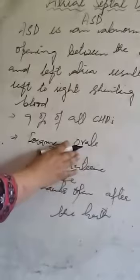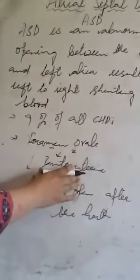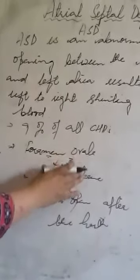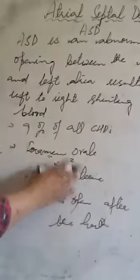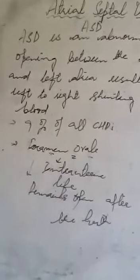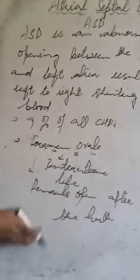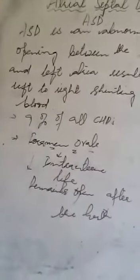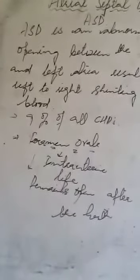During intrauterine life, the foramen ovale is a temporary opening. After the birth of the baby it closes, but in some cases the foramen ovale remains open after birth, resulting in atrial septal defect. This is the definition of atrial septal defect.